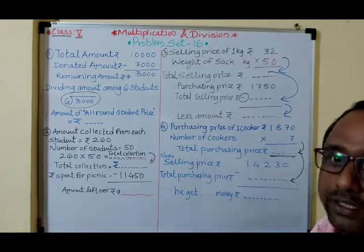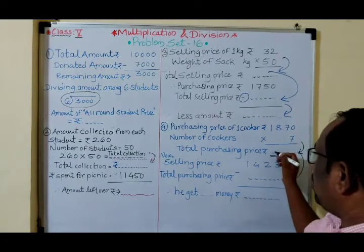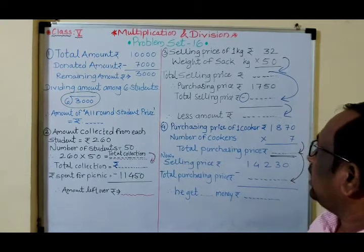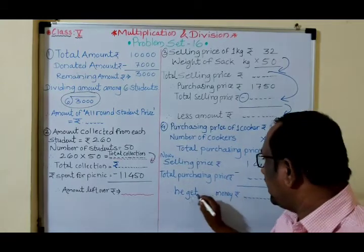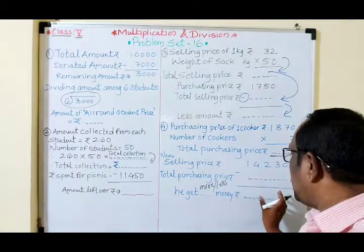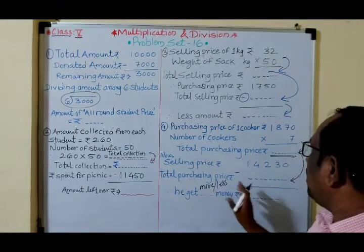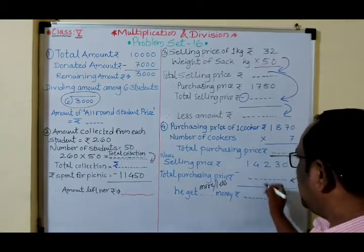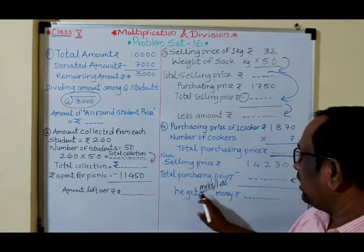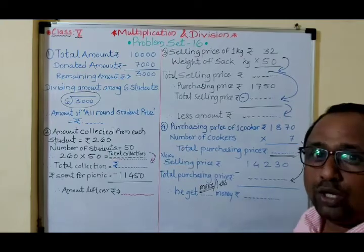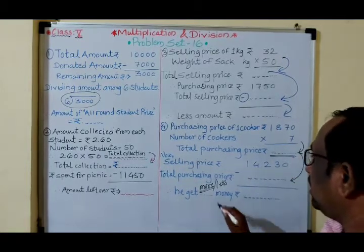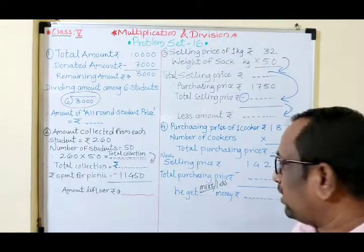Now subtract: selling price ₹14,230 minus total purchasing price (from your multiplication). Whatever you get tells you if he made more or less money. If the result is positive, he got more money — that is profit. Write: 'He got more money' and state the profit amount. Do the multiplication first, then subtract from ₹14,230 to find the profit.